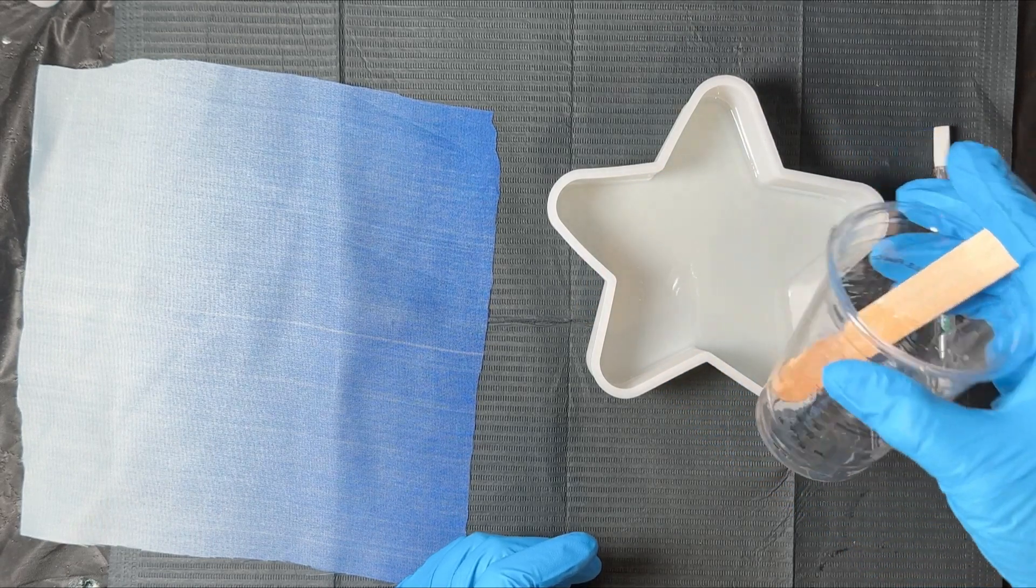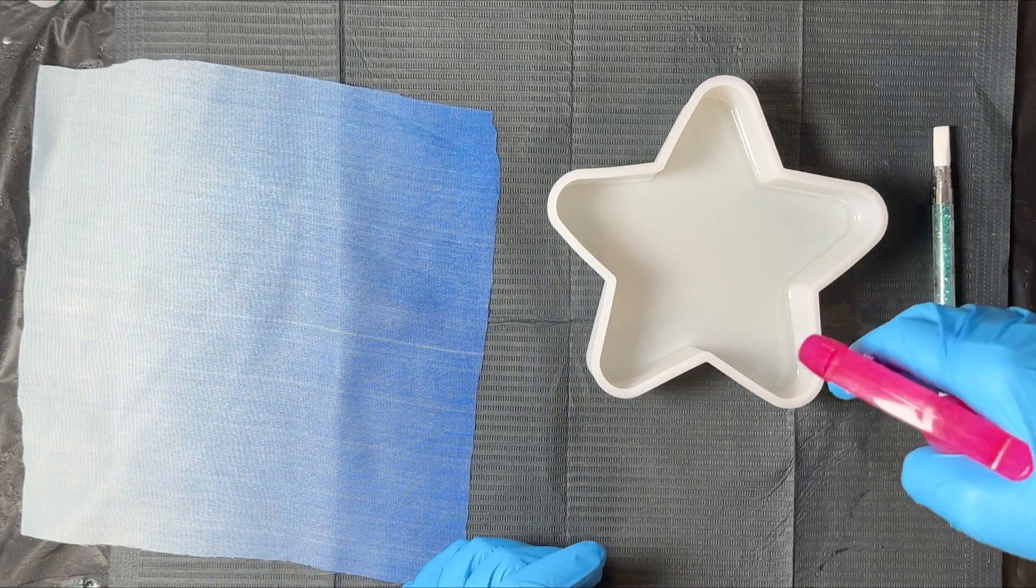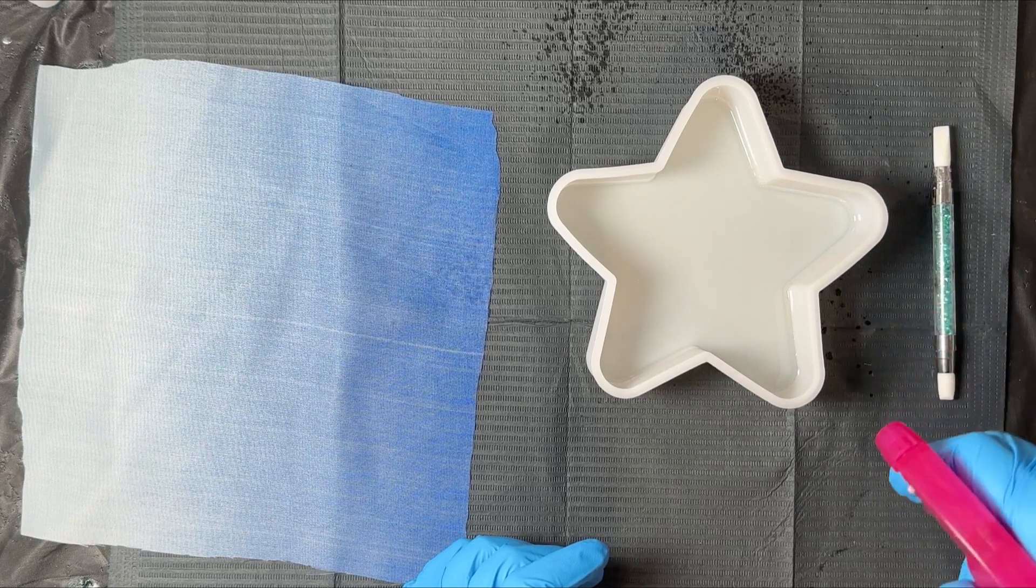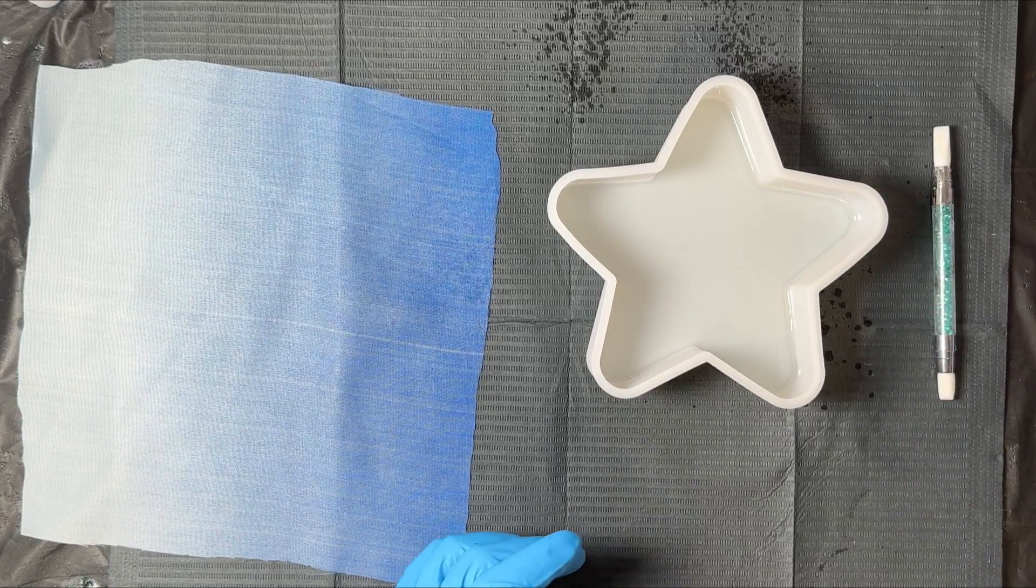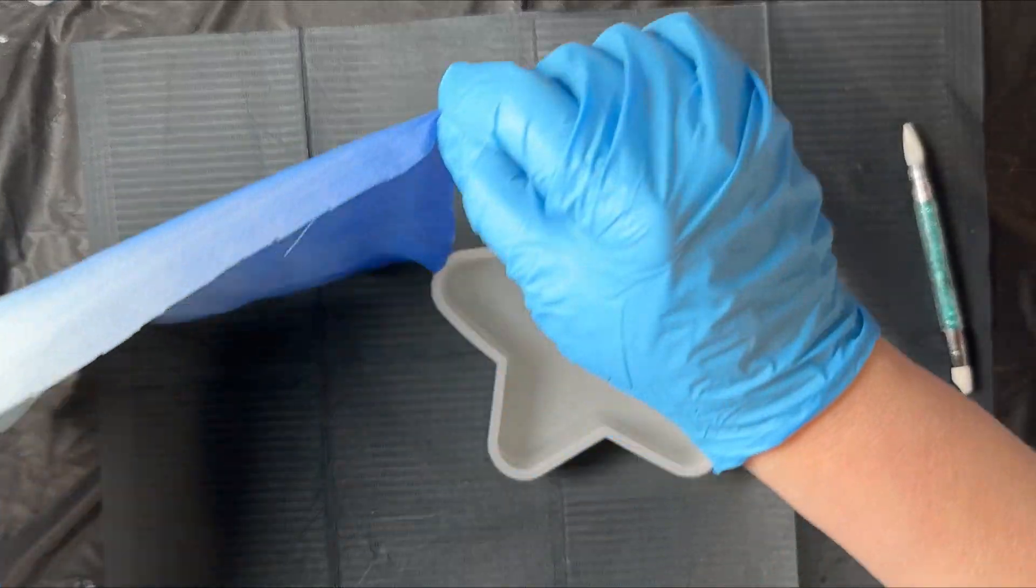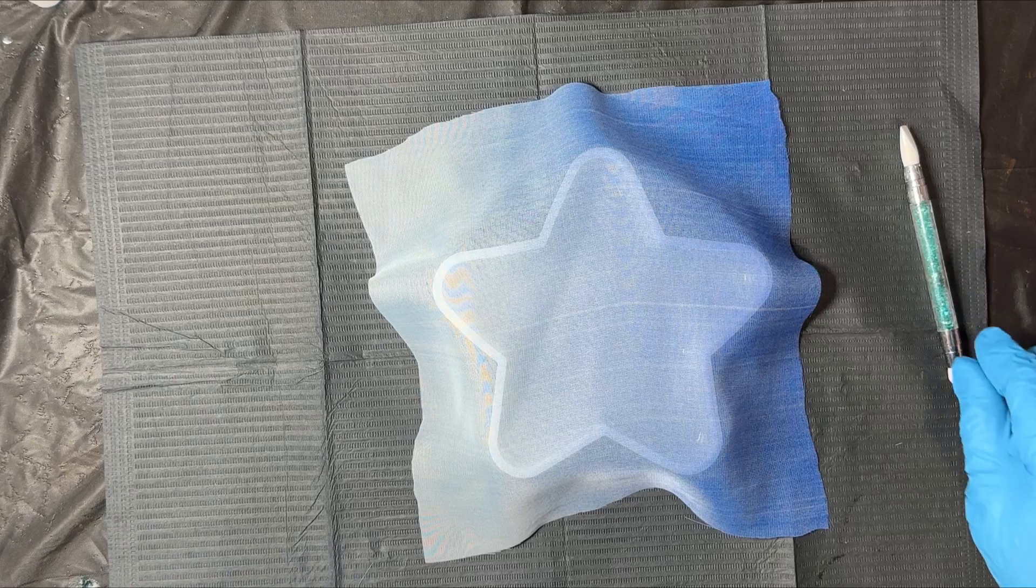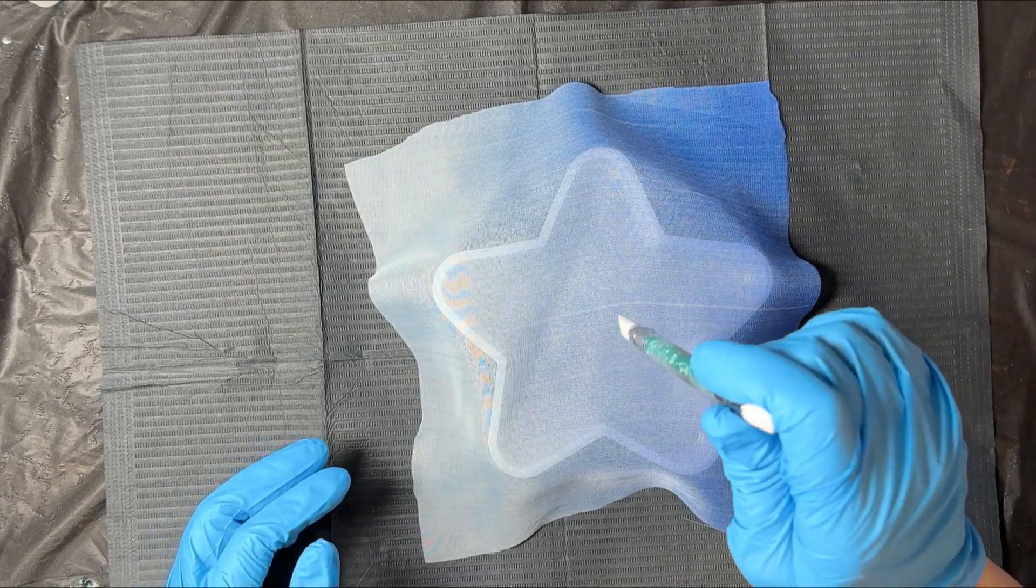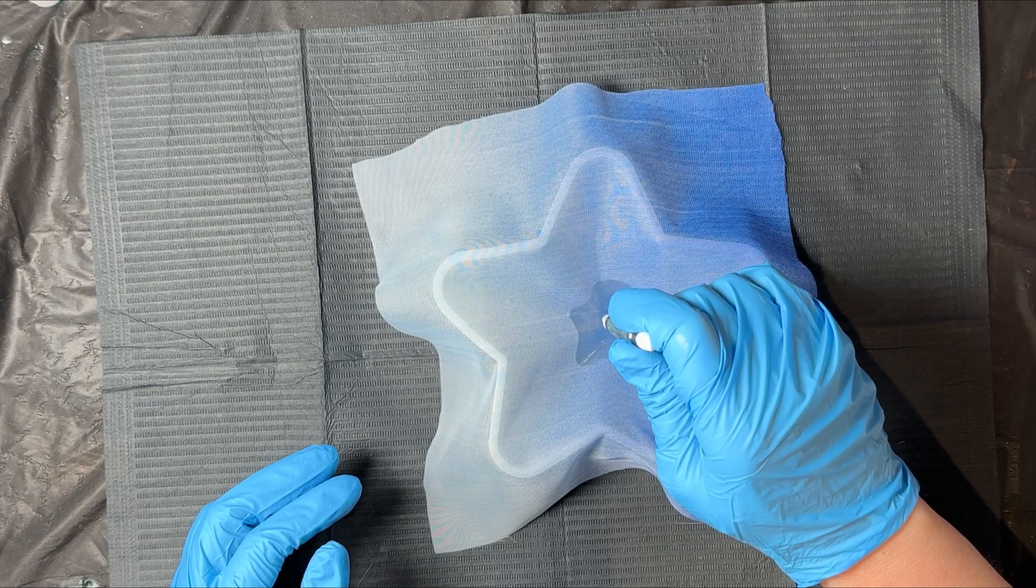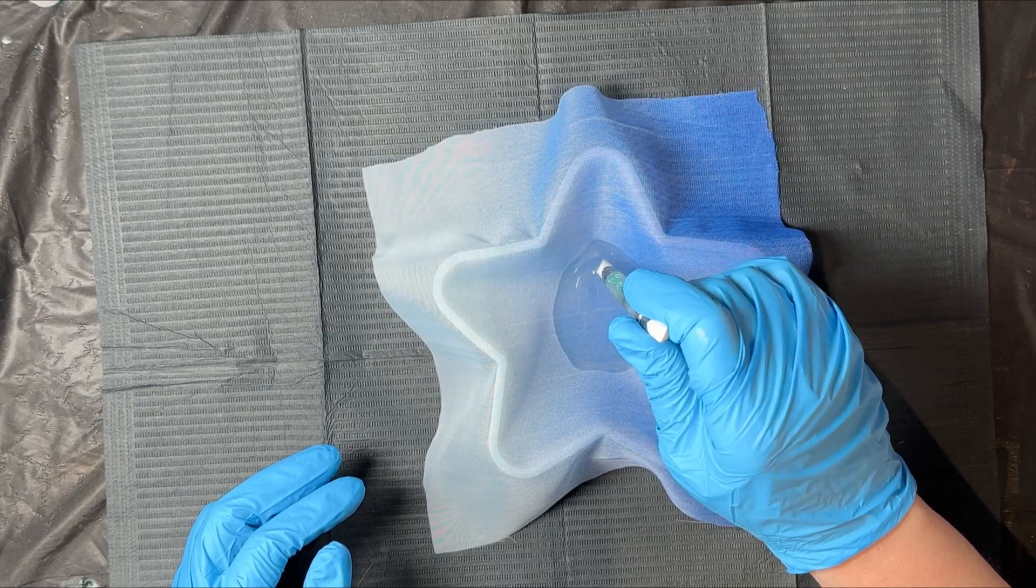Now that my resin is in the mold, I'm going to spritz it with a little isopropyl alcohol to minimize bubbles as much as humanly possible. Then I am going to take this piece of chiffon and place it over the mold, and I'm just going to use one of these nail tools with a silicone tip and press down in the middle very slowly, working my way around the mold, bringing in the fabric as I push down into the resin.